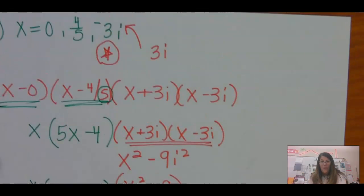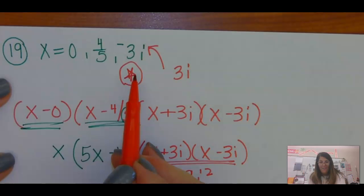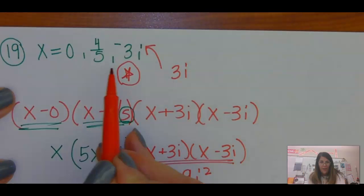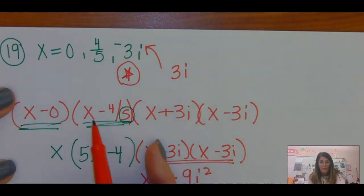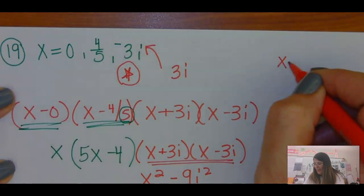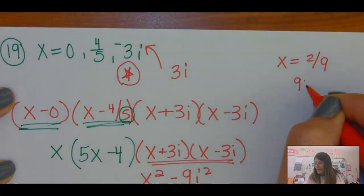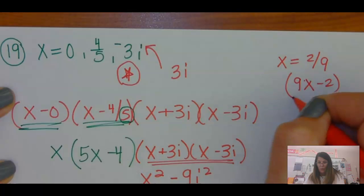All right, hope that you remember whenever you have a radical or an i, you've got to grab the other one. Whenever you have a fraction, it comes up to the front. So, like if I got x equals 2 ninths, you would make that 9x minus 2.